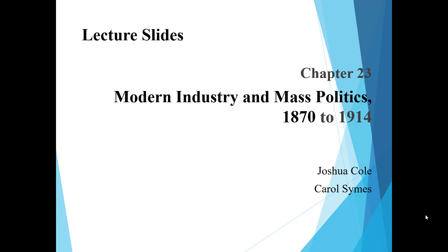Chapter 23: Modern Industry and Mass Politics from 1870 to 1914. One of my biggest complaints about any textbook is that I believe in something being linear — you start at 1870 and go to 1914. We're going all the way to 1914, which begins with World War One. Chapter 24 will skip back and cover industrial imperialism. Let's get started on this really interesting chapter.